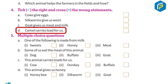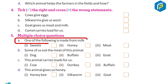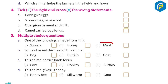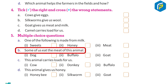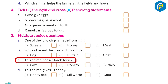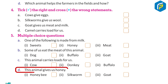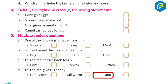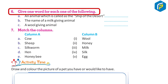Five — multiple choice questions: a) One of the following is made from milk: one) sweets, two) honey, three) meat. b) Some of us eat the meat of this animal: one) dog, two) buffalo, three) goat. c) This animal carries load for us: one) cow, two) donkey, three) buffalo. d) This animal gives us honey: one) honeybee, two) silkworm, three) goat.